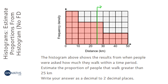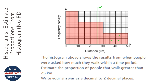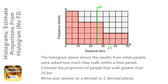I can work out the areas of each section, which would be proportional to the frequency, or I can just count the squares — which is easier. So counting: 1, 2, 3, 4, 5, 6, 7, 8, 9, 10, 11, 12, 13, 14, 15, 16, 17, 18, 19, 20, 21, 22, 23, 24, 25, 26, 27, 28, 29, 30, 31, 32, 33, 34, 35, 36.